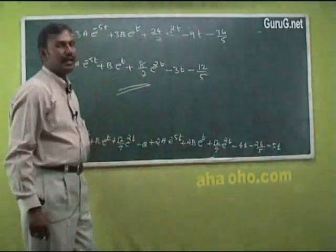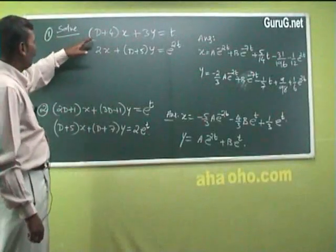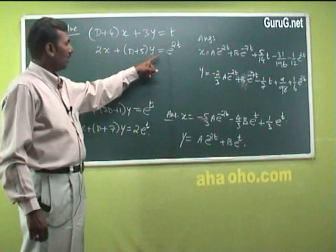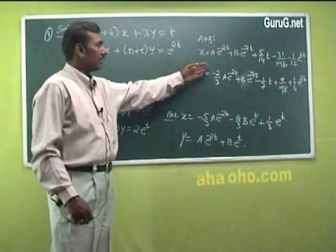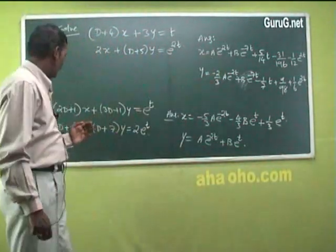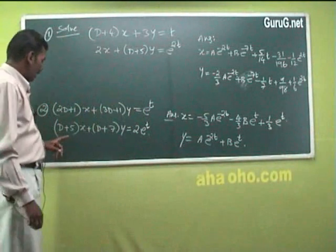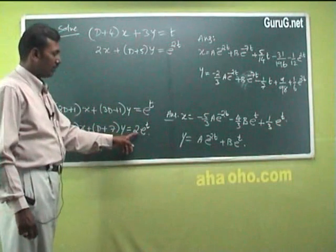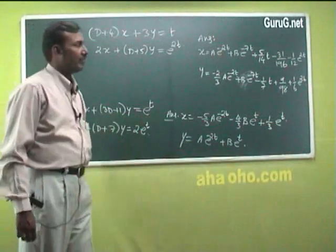Try these practice problems. First: solve (d plus 4)x plus 3y equal to t and 2x plus (d plus 1)y equal to e^(2t), a simultaneous first-order differential equation — verify the corresponding answer. Second: solve (2d plus 1)x plus (3d plus 1)y equal to e^t and (d plus 5)x plus (d plus 7)y equal to e^(2t) — verify this answer as well.